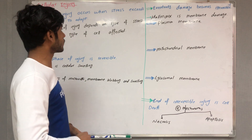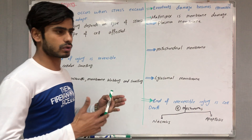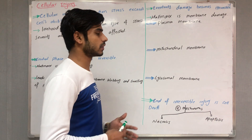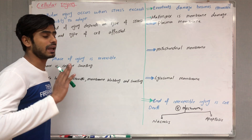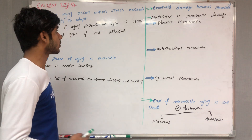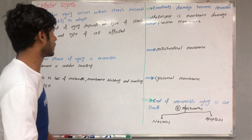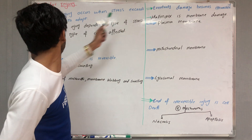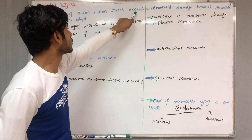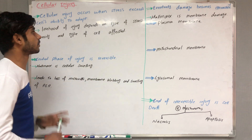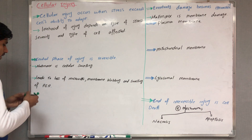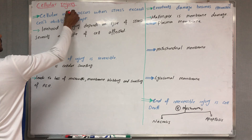Previously we discussed that when stress is applied on an organ, the organ first shows homeostasis. But if there is an increase, decrease, or change in stress, the organ will show growth adaptations — hypertrophy in case of increased stress, atrophy in case of decreased stress, and metaplasia in case of changed stress. But if the stress exceeds the cell's ability to adapt, the cell will not go to homeostasis or adaptations; rather, the cell will undergo cellular injury.